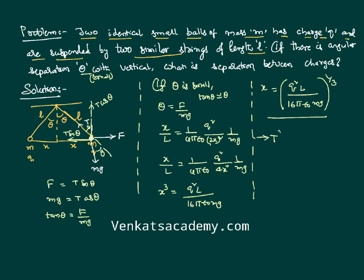It is also clear from the triangle law that we can write T² equals F² plus mg². If you want to calculate the tension, you use this formula: F can be calculated using Coulomb's inverse square law, and m is given.